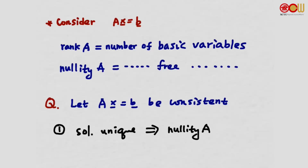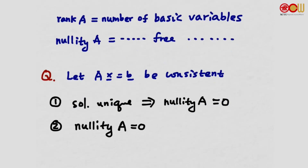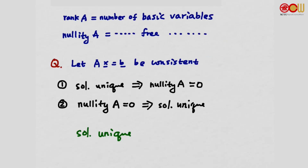Now the converse: if nullity(A) = 0, is the solution unique? If nullity equals 0, there are no free variables — only basic variables — so there is exactly one solution. Combining both directions: for a consistent system, the solution is unique if and only if nullity(A) = 0. These two properties are equivalent for a consistent system.